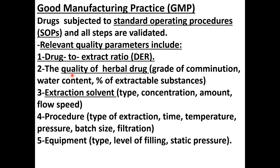The quality of the herbal drug used in the extraction process should possess the convenient degree of comminution, the suitable water content, and the percent of extractable substances should also be determined. The extraction solvent, the time, the concentration, the amount, and the flow speed of the solvent should be specified. The procedure of extraction itself and the time of the extraction, the temperature, and the pressure — all that should be determined beforehand.